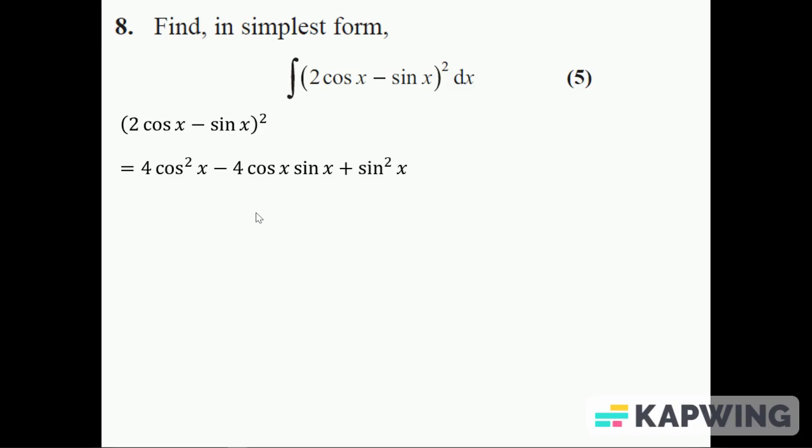Now there's a particular way of integrating cos squared and sin squared. We use the double angle formulas. We get those by looking at the formula book where it says the cos of A plus or minus B is equal to that.